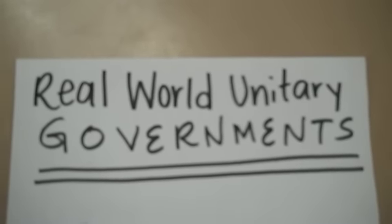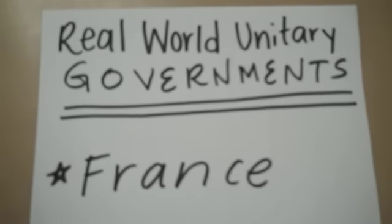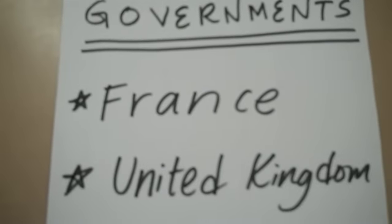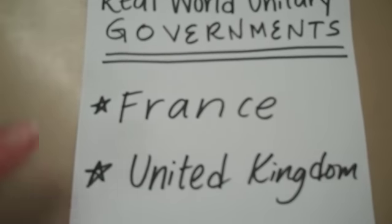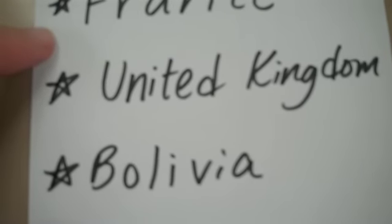For the last part of our video, we're going to talk about some real-world unitary governments. They are France — France has a unitary government. The UK has a unitary government. Now, if you are a unitary government, you're not only going to be unitary. In the case of the United Kingdom, you might be unitary, parliamentary democracy, and also a constitutional monarchy. Most countries don't only just have one type. Another example is Bolivia, which is in South America. And the final example we're going to mention is Cuba.